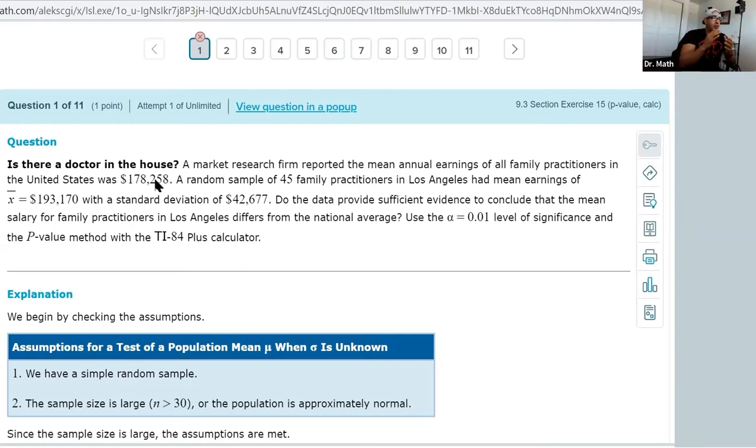That's the overall average, that's what we know so far - that's our population mean. A random sample, so we're only going to take a very small sample here, 45 family practitioners in LA had a mean average of this number right here, which was larger, and had a standard deviation of $42,000. Notice this standard deviation here comes from this sample of 45, and so because this standard deviation comes from this sample, this is our sample standard deviation.